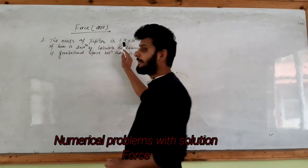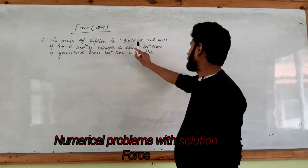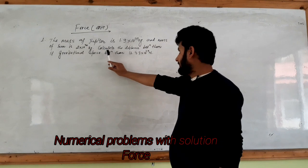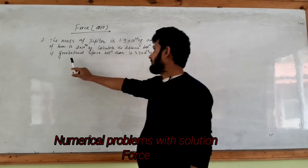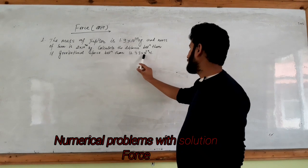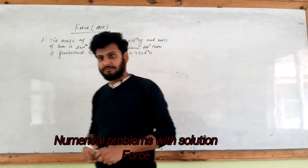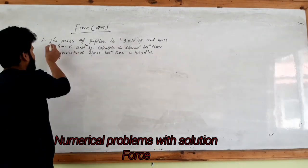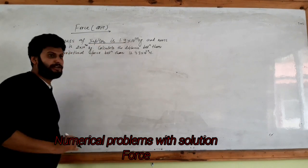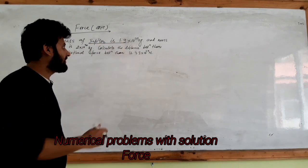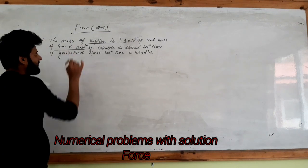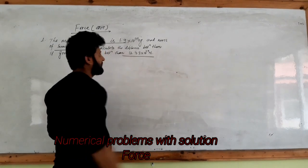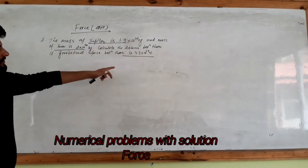The mass of the first body is 1.9 into 10 to the power 40 kg and the mass of the second is 3 into 10 to the power 40 kg. Calculate the distance between them. The distance between them is 4.3 into 10 to the power 29.